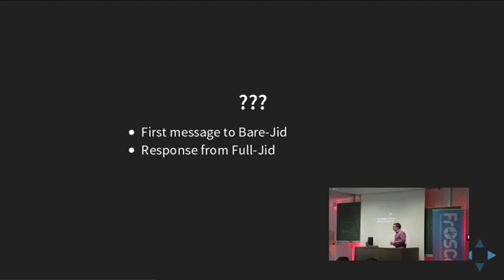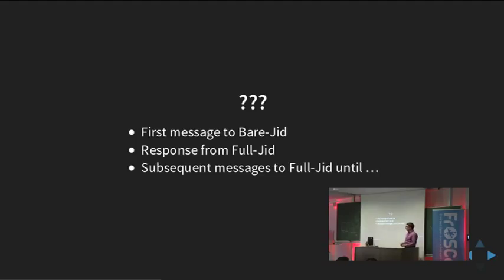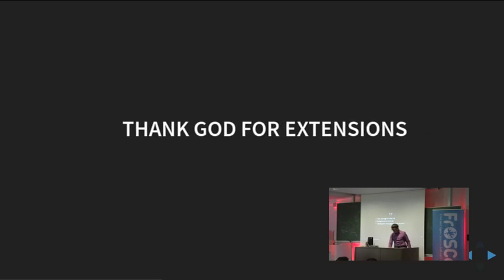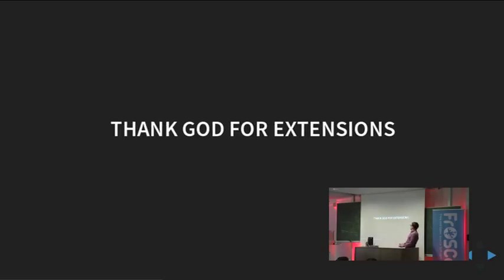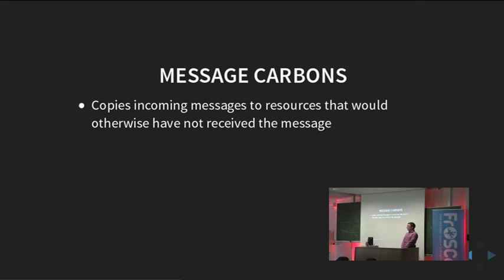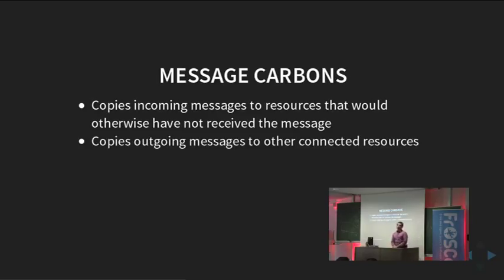You really don't want to teach your mom how priorities work and why a message sent to the mobile phone didn't arrive at the desktop. The original idea was to send the first message to the bare Jabber ID, let the server pick the resource, then use the full JID for subsequent messages. But on Android you don't have chat windows to close. Thankfully, there's an extension that solves the routing issue by simply copying all incoming messages to all your resources — and this also works for outgoing messages.